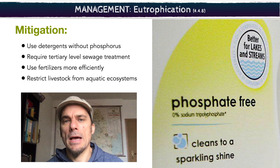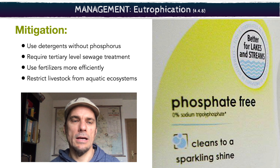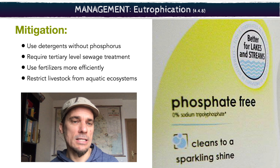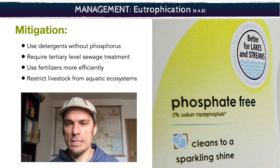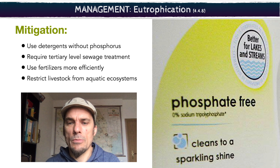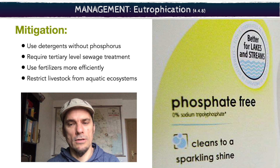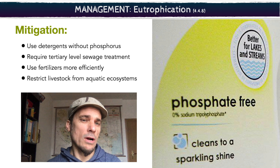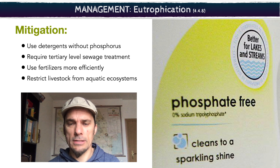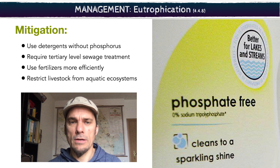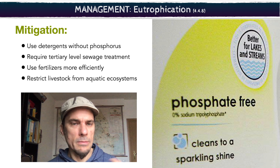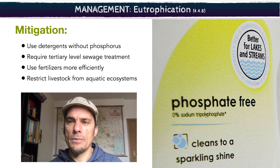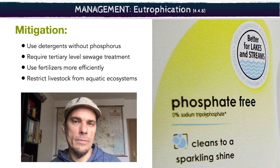The last thing to look at is managing eutrophication — how do you mitigate it before it happens? Things we can do include using phosphate-free detergents. Remember NPK — eutrophication is really all about the N and the P, so if we can get rid of phosphates, we're doing a good job. We can require tertiary sewage treatment — it's more expensive, but governments can provide subsidies to implement it for cleaner water. Using fertilizers more efficiently and keeping livestock away from water sources also keeps nitrogen out of the water.